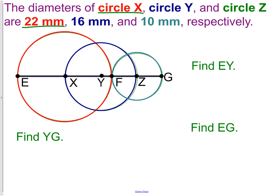So what I'm going to do is I'm going to put the radius on instead. So I'm going to put a radius of 11. Next we have circle Y, which has a diameter of 16, which gives us a radius of 8. And lastly they give us circle Z, which has a diameter of 10, which gives us a radius of 5.